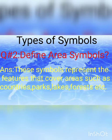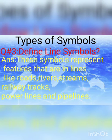The second question: define area symbols. Area symbols کیا ہوتے ہیں؟ جیسا کہ ہم نے ویڈیو میں پڑھا — these symbols represent the features that cover areas such as countries, parks, lakes, forests, etc. یعنی کہ یہ different boundaries کو show کرتے ہیں on the map.